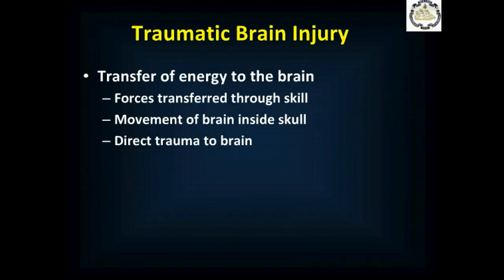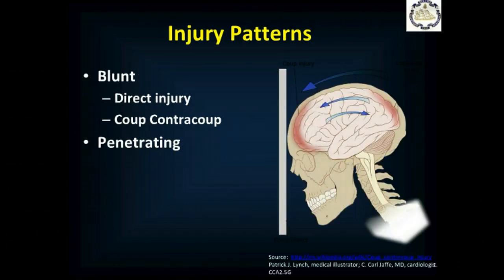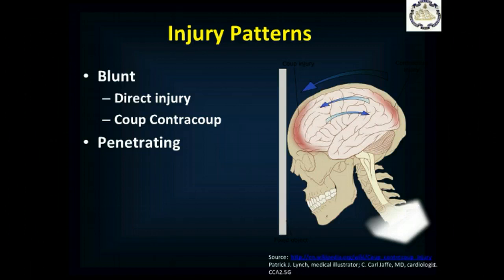Trauma is the transfer of energy from any source to soft tissue causing damage. Forces can be transferred directly through the skull — the skull is a hard structure and propagates that force directly impacting the brain. The brain will move inside the skull, causing injuries as it strikes the interior of the skull or slides across the base. With blunt trauma, you can get a coup injury where the skull strikes a fixed object, the brain moves forward, and force is transmitted to the front of the brain. The brain then moves backwards striking the back of the skull — the contre-coup injury. Coup-contrecoup is a very common injury pattern in significant blunt trauma.